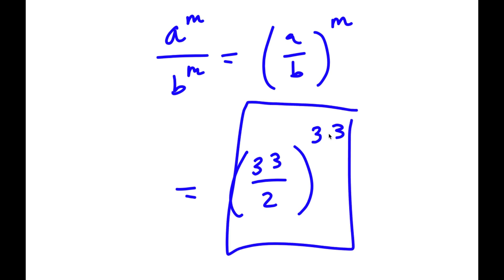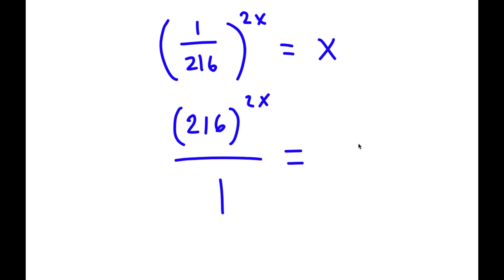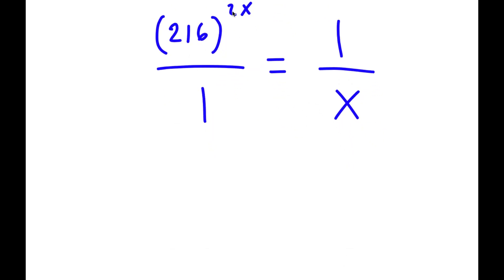So this is my answer. In this next problem, I have 1 over 216 to the power of 2x is equal to x. The first thing I'm going to do is take the reciprocal on both sides. So this is the same thing as 216 to the power of 2x is equal to 1 over x, since anything divided by 1 is itself.